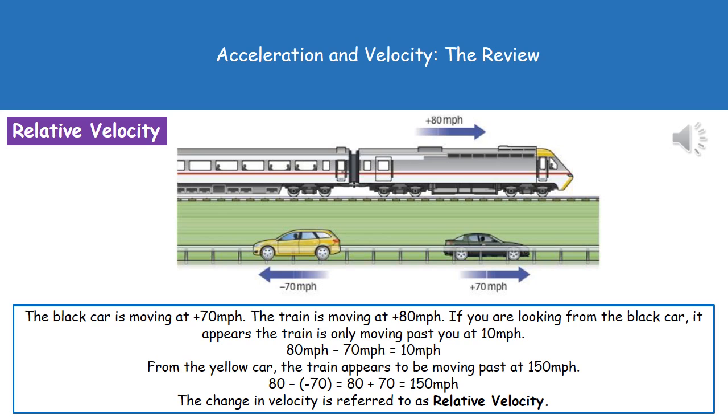The way that we work that out is we start off with the velocity of our train, which is plus 80, and we subtract the velocity of our car that we're traveling in. So that would be 80 minus 70, gives us the relative velocity of 10 miles per hour. If we were sitting in the yellow car looking at that same train, the train seems to be going past really fast. By doing that same calculation, so 80 is our train, and then we subtract the velocity of our car. We're actually going to be taking away minus 70. Two minuses makes a plus. So in reality, the calculation we do is 80 plus 70, which gives us our relative velocity of 150 miles per hour.